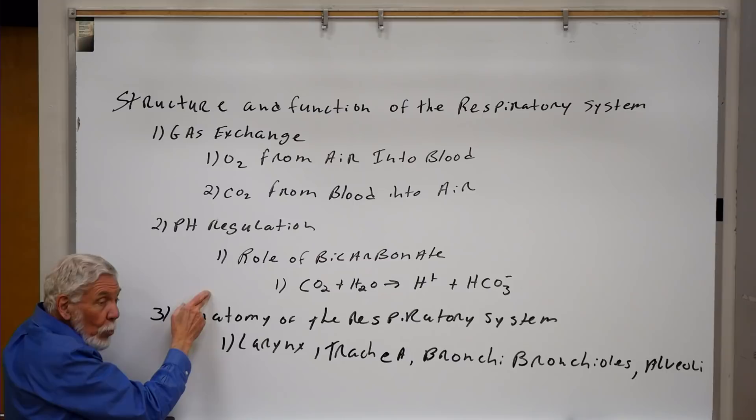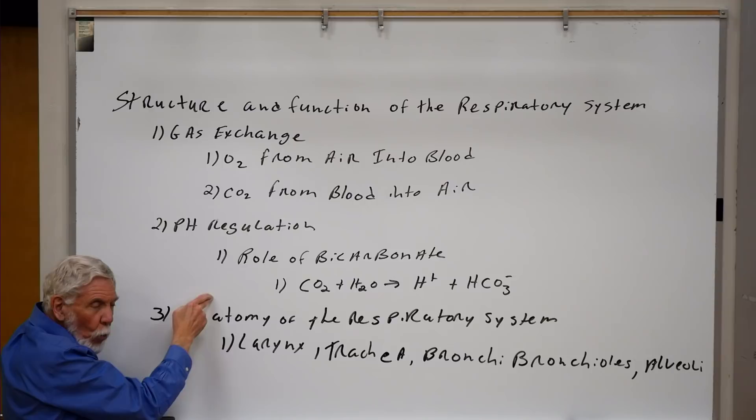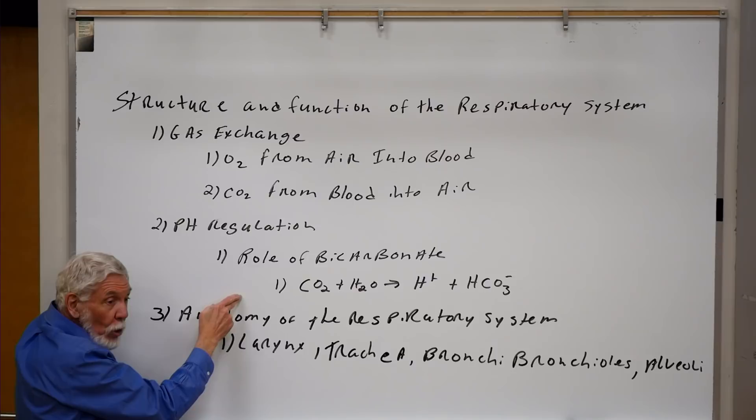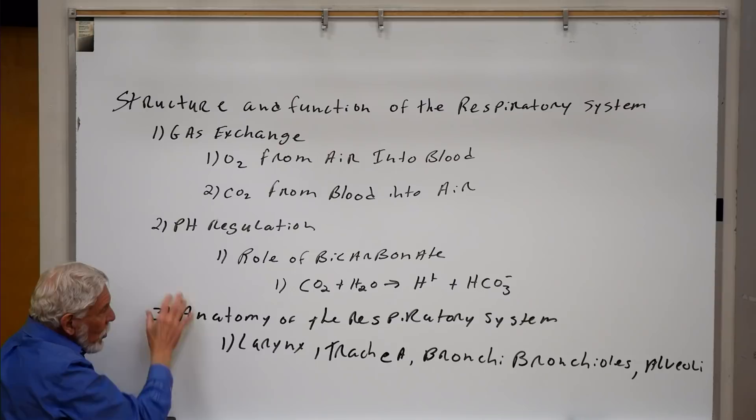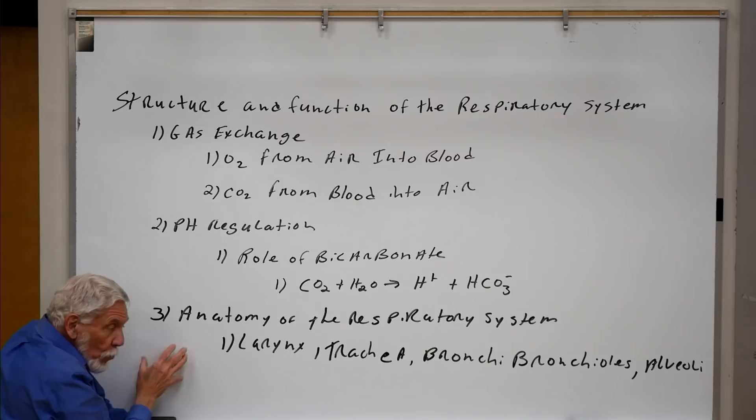Most of you recognize that bicarbonate is a terrible buffer in the range of 7.2 to 7.4 — its pKa is down around 4 to 4.5. But we have so much bicarbonate around that we can utilize it because of its high concentration to buffer in the 7.2 to 7.4 range. We're not going to spend a lot of time on the buffering system; we'll spend most of our time today talking about the anatomy and, to some extent, the physiology of the respiratory system.